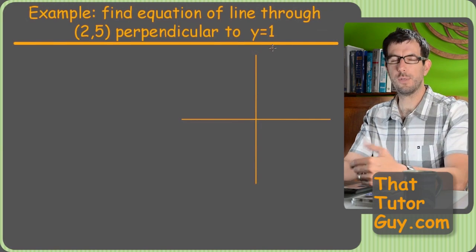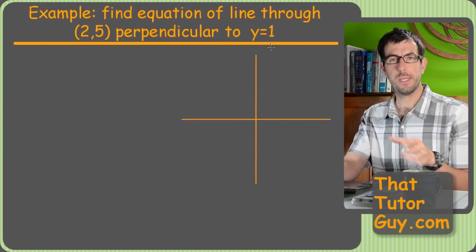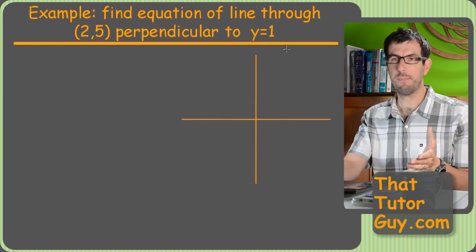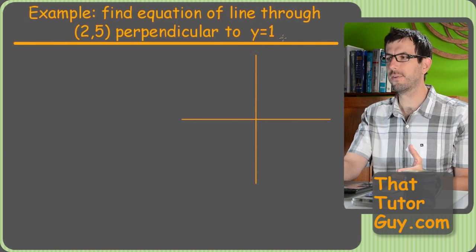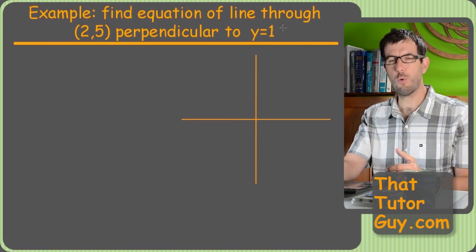You know, because if the way you always do these is you figure out the slope based on whatever number happens to be in front of the x that x is multiplied by, then if there's no x, you're like, uh-oh, can't find a slope.